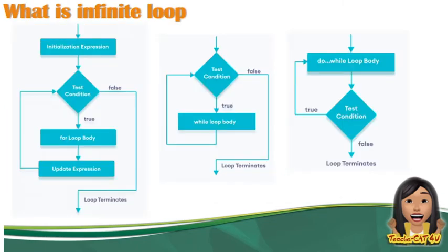Ito yung flow chart ng tatlong loop statement natin. Kay for loop muna tayo: mag-initialize ka muna ng expression, itetest yung condition, then gagawin yung loop body, i-update yung expression, then itetest ulit yung condition. Kung mapapansin ninyo sa kanilang tatlo, laging inuulit yung test condition hanggang ang given condition ay nag-do true. Inuulit-ulit lang nila yung given block of code o yung body.